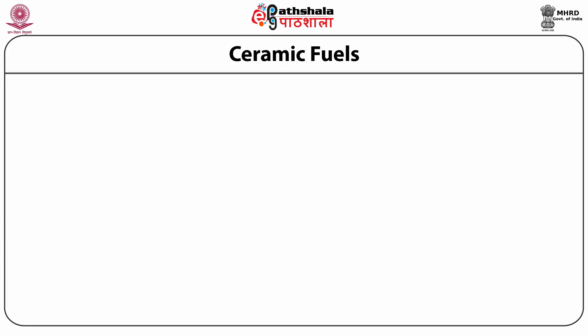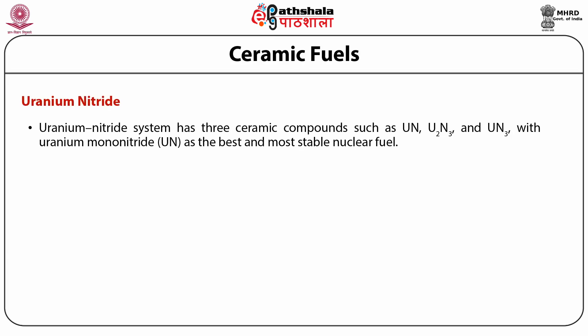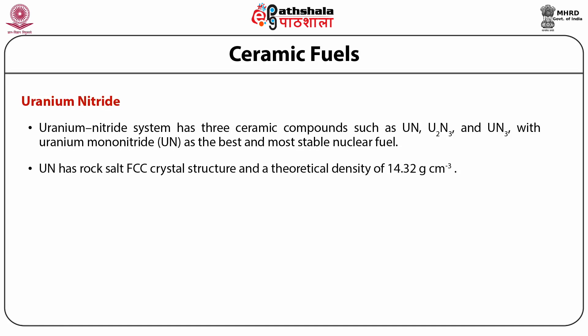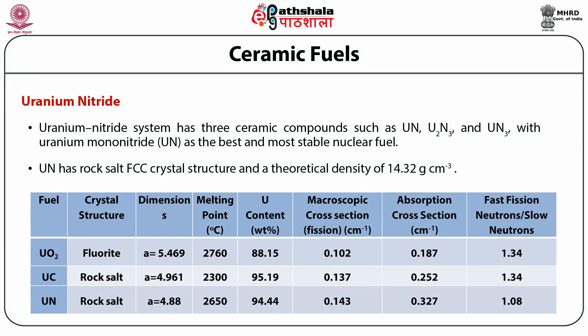The last ceramic fuel is uranium nitride. The uranium-nitrogen system has three ceramic compounds: UN, U₂N₃ and UN₂, with uranium mononitride (UN) as the most stable nuclear fuel. UN has a rock salt FCC crystal structure and a theoretical density of around 14.32 g/cm³. It keeps its stoichiometry up to high temperatures and becomes non-stoichiometric beyond 1500°C. The table below summarizes the various features of different uranium ceramic fuels.